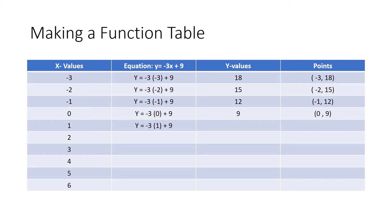For the fifth row I have an x value of one. My equation is negative three times one plus nine. I type that in the calculator and get an answer of six. I take my x value one and my y value six and make it a point, which is one, six.